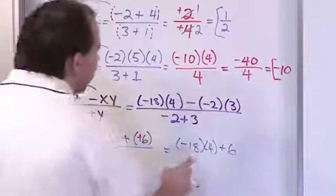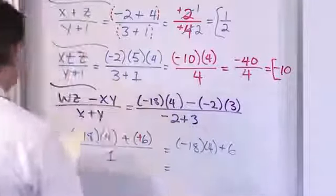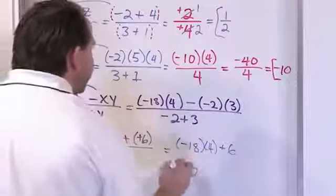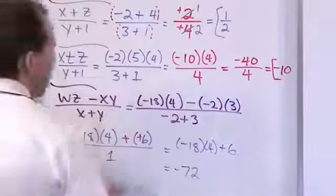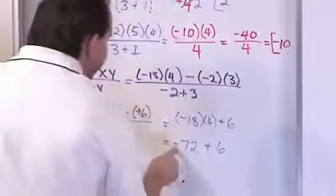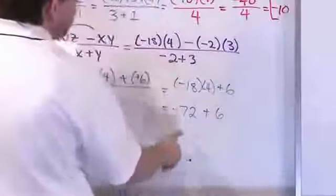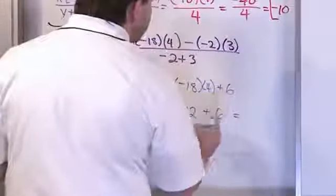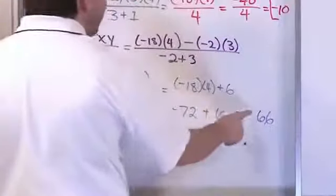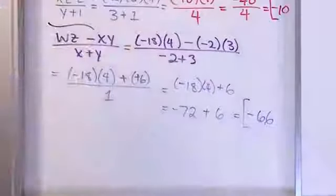We now have negative 18 times 4, plus 6. Negative 18 times 4: 18 times 4 is 72, different signs so negative 72. Then negative 72 plus 6: different signs, ignore signs and subtract — 72 minus 6 is 66 — and it takes the sign of the larger absolute value, which is negative. So the answer is negative 66.